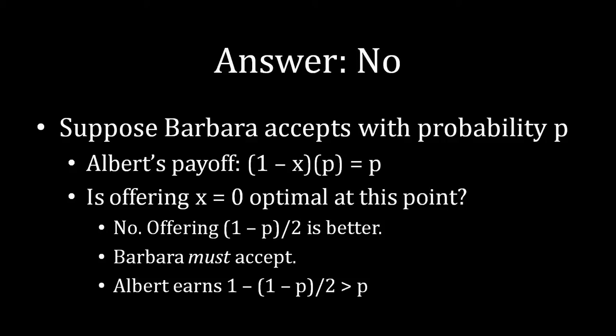Under these circumstances, Albert's payoff is 1 minus x times p. That's the offer that he's giving, the remainder of the offer he's giving to Barbara. So remember, x is the amount that Barbara gets. So 1 minus x is the amount that Albert keeps to himself, times probability p, which is the probability that Barbara accepts. But remember here, x is equal to zero. Albert is demanding everything for himself. So 1 minus x times p simplifies very quickly to just p exactly. So Albert's payoff if he demands everything leaves Barbara nothing and Barbara accepts with probability p is equal to p.